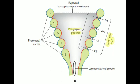There are four pharyngeal clefts and four pharyngeal pouches. Initially there are five pharyngeal pouches but the fifth pouch is rudimentary, so it will disappear soon.